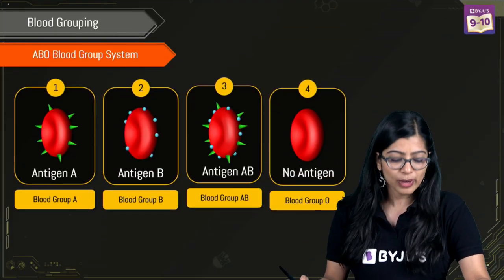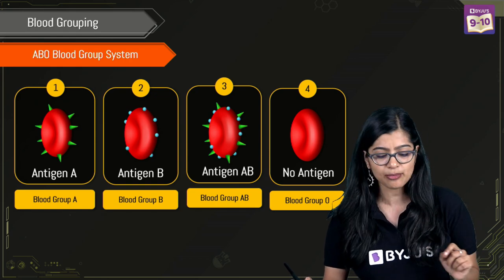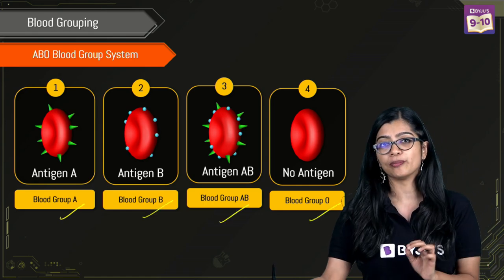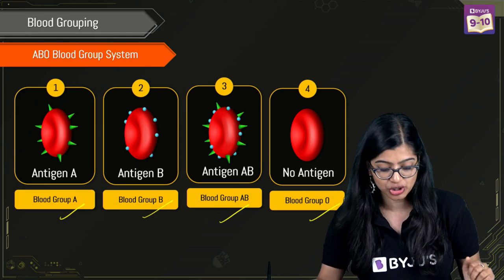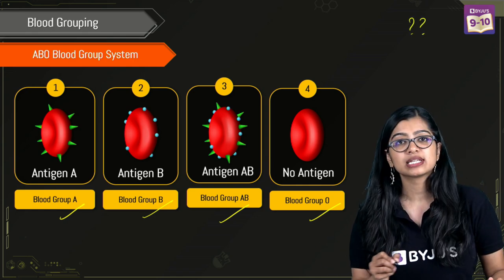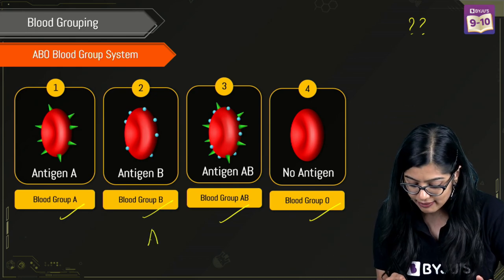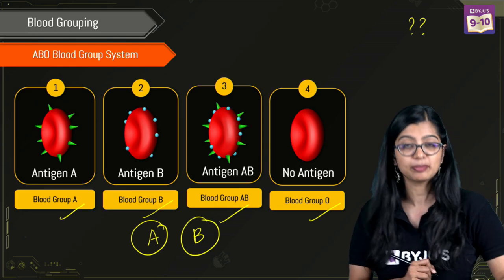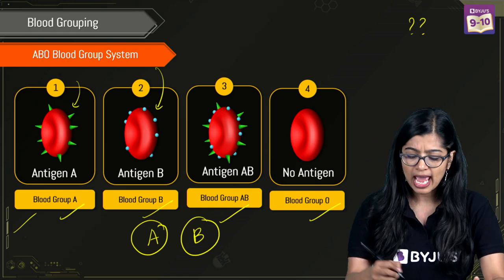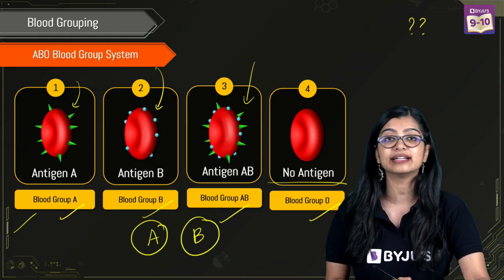To quickly recall, we know that there is the ABO blood grouping system, which was proposed by Karl Landsteiner, where there are four blood groups — blood group A, blood group B, AB and O. This system came into the picture with respect to the presence of certain antigens — substances which have the ability to trigger an immune response. We broadly have antigen A and antigen B. If antigen A is present, it's blood group A; if antigen B, it's B; if both are present, it's AB; and if neither antigen is present, it's blood group O.